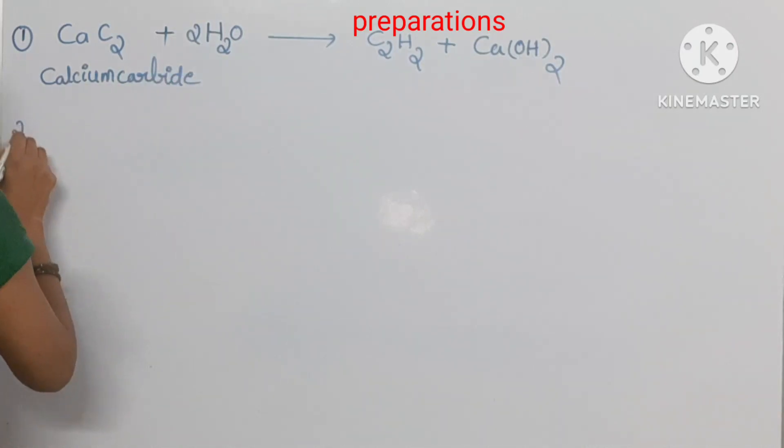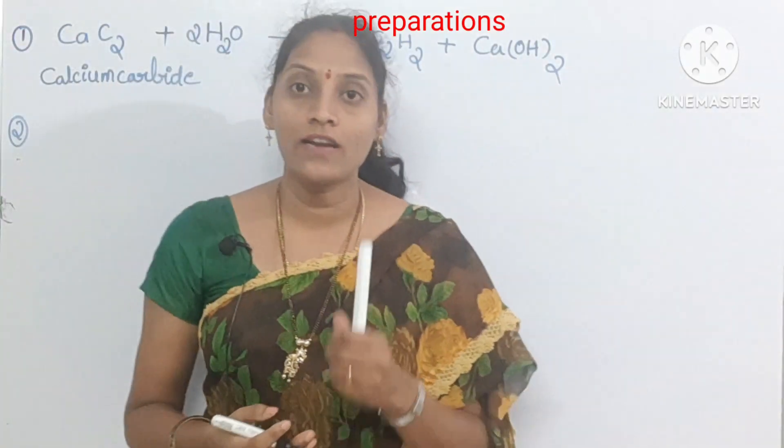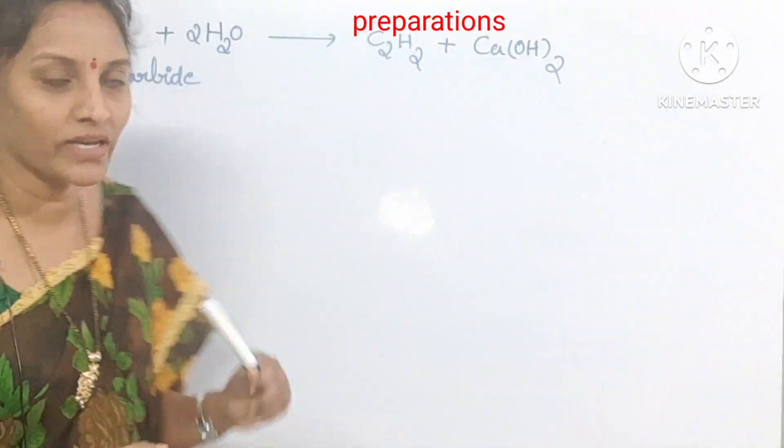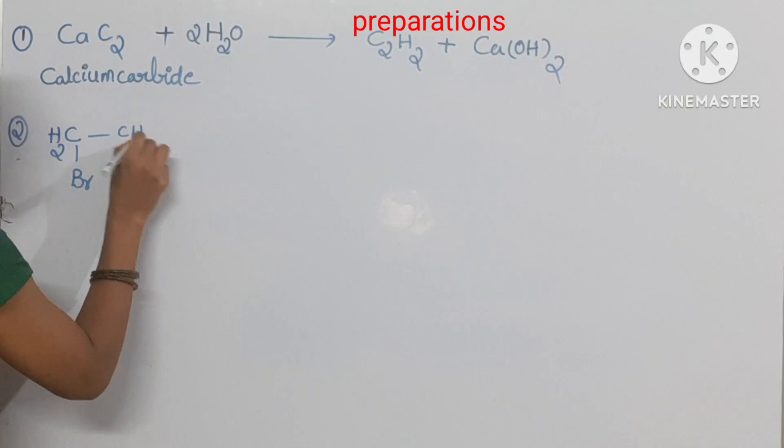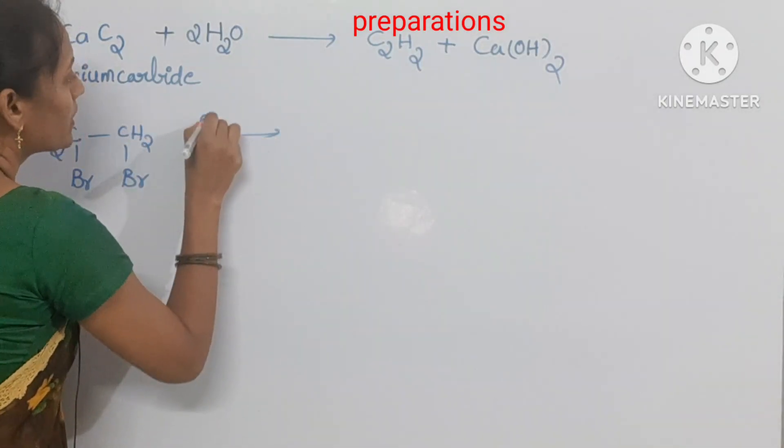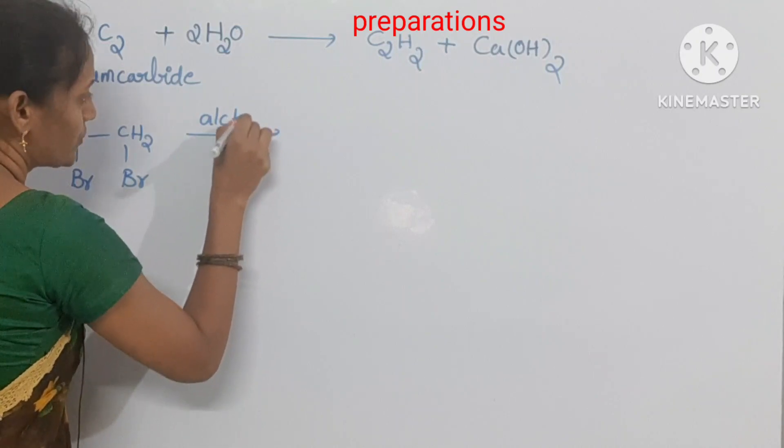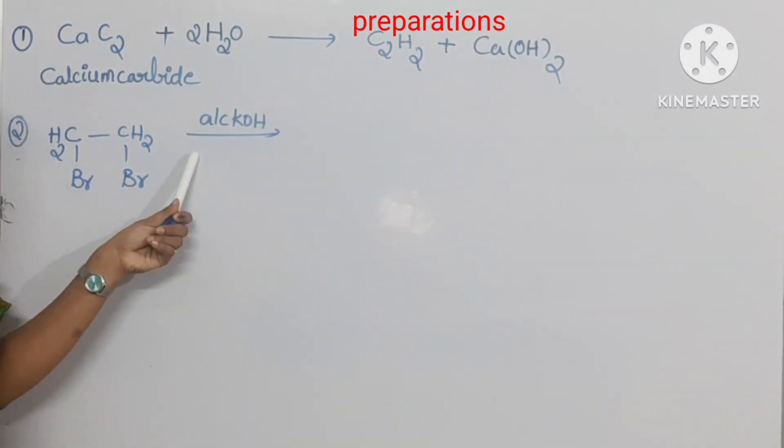From the second method onwards, these are the laboratory preparation methods. In this one, vicinal dihalide CH2Br-CH2Br reacting with alcoholic KOH. This is the vicinal dibromide, we can also call it 1,2-dibromoethane.